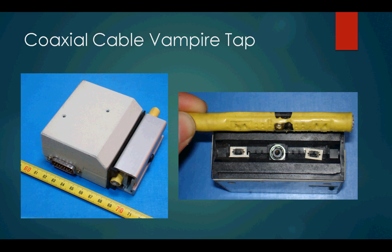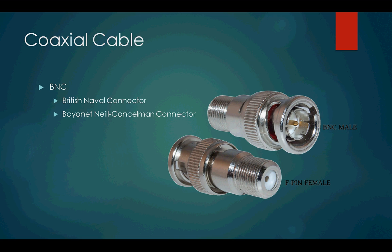Multiple people share the same cable. The coaxial cable vampire tap is what it was called, because it would bite into the cable and inject a needle. This device would broadcast to other vampire taps to stop so it could handle a transaction, then tell the others to turn back on. This was known as bus topology. The terminator for coaxial is the BNC — a lot of people know it as a British naval connector, but it's actually the Bayonet-Neill-Concelman connector.